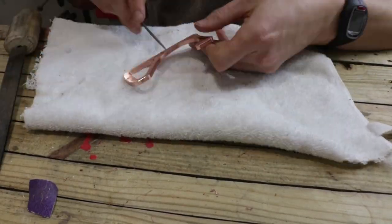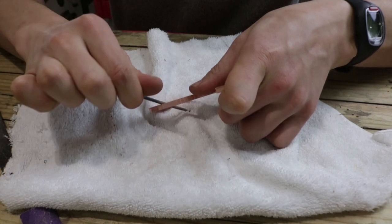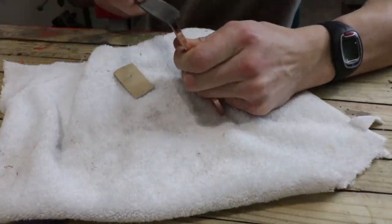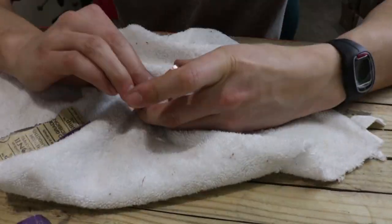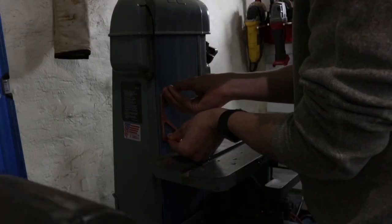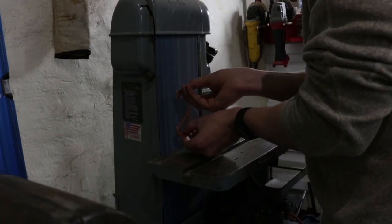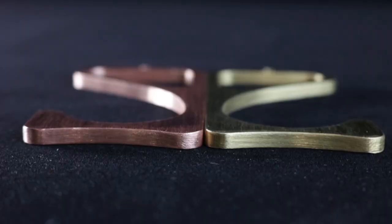Just like before, we're gonna have to deburr all the edges, sand the surfaces, and make it nice and comfortable and smooth to hold. And to finish this part off, we're gonna sand each side on the combination sander.